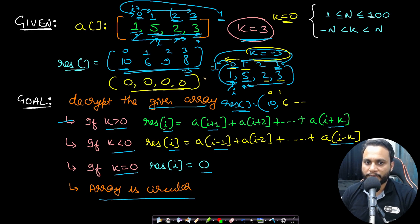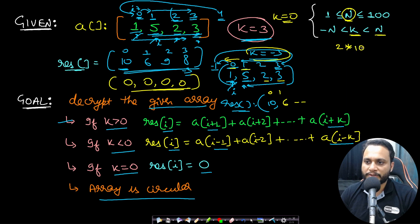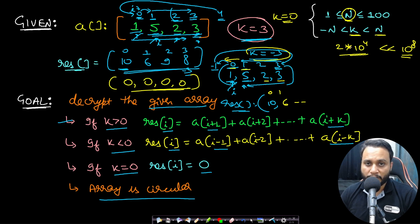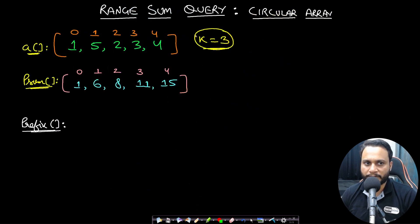This is the brute force approach. Since n is just 100 and k only ranges from -100 to 100, the total operations are 2×10^4, which is far less than 10^8. It will definitely run within 1 second and pass. But this is not the optimal solution — let's build the optimal solution.